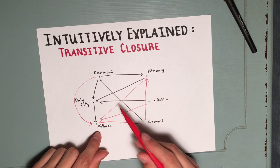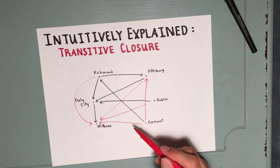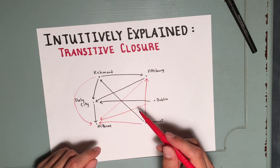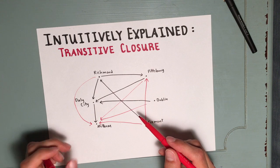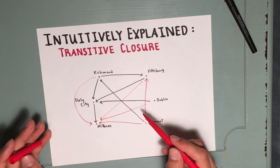What we have here, the collection of red and black arrows, will be the transitive closure. Now, that's the meaning of the transitive closure. In future videos, I'll get into how to find it for a given relation.